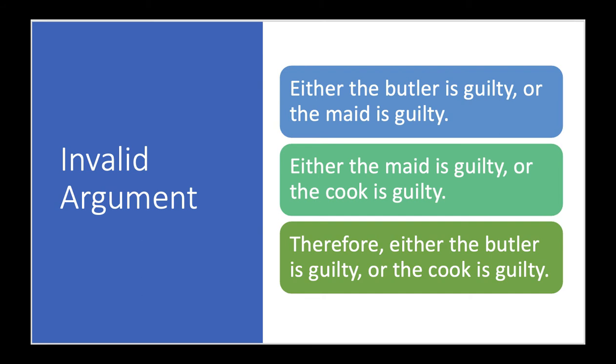Let's look at an invalid argument. Either the butler is guilty or the maid is guilty. Either the maid is guilty or the cook is guilty. Therefore, either the butler is guilty or the cook is guilty. Now this is an invalid argument. The argument is invalid because even if both premises are true, the conclusion could be false. For example, the maid could have done it.